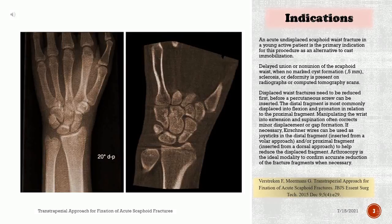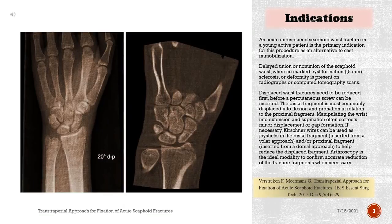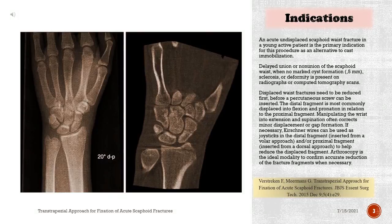An acute undisplaced scaphoid waist fracture in a young active patient is the primary indication for this procedure as an alternative to cast immobilization. Delayed union or nonunion of the scaphoid waist, when no marked cyst formation greater than 5 mm, sclerosis, or deformity is present on radiographs or computed tomography scans, is also an indication.